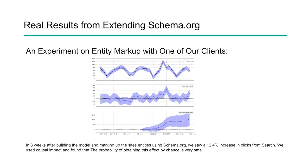To show that this doesn't happen in isolation, this is an experiment we ran using some extensions of entity markup with one of our client's websites. After three weeks of building the model and marking up the site more extensively with entities and extending the schema.org, we saw a 12.4% increase in clicks from search. We also leveraged Causal Impact, and we found that the probability of attaining this effect by chance was extremely small — the result was statistically significant. The crawlers do like the fact that you extend your structured data and provide more value.